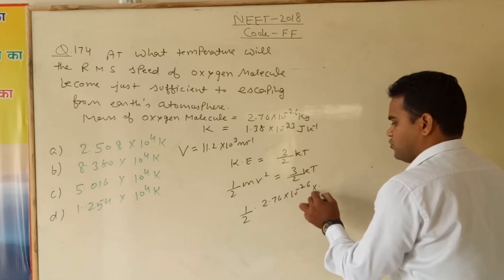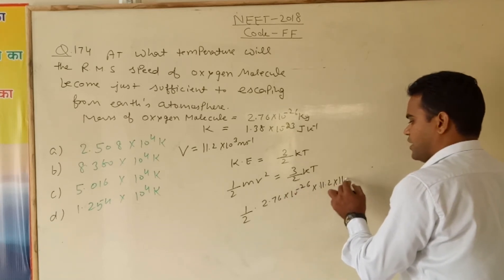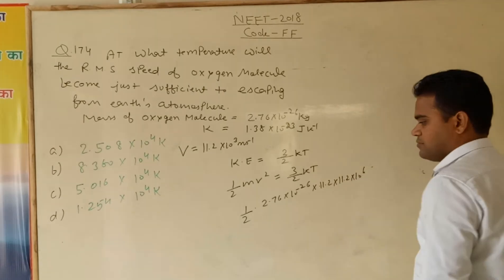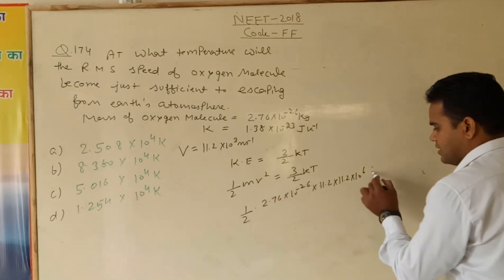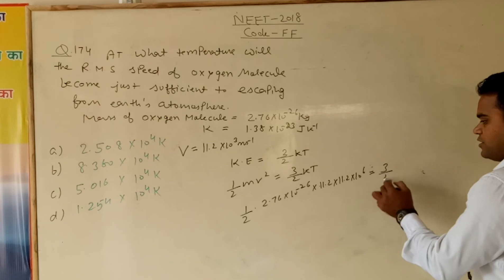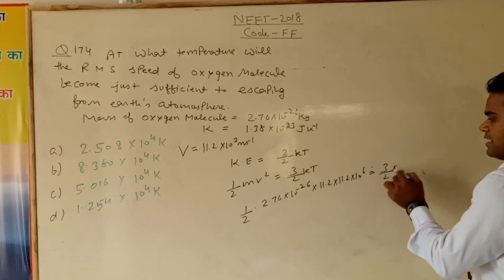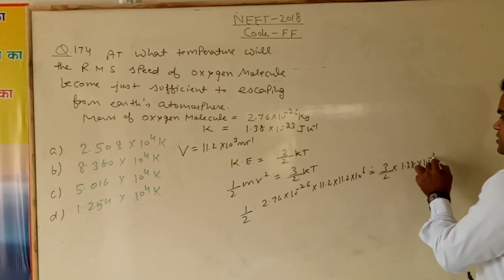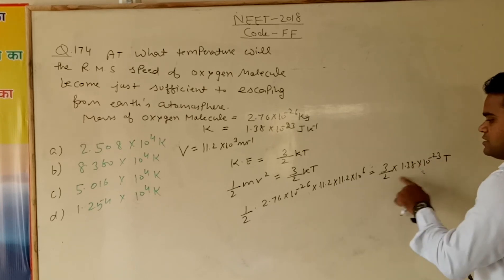Let me write this again. This is equal to 3 by 2 k. K, that is value 1.38 times 10 to the power minus 23 times T. That is called Boltzmann constant. Sorry, the k, that is Boltzmann constant.